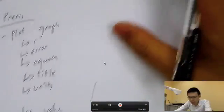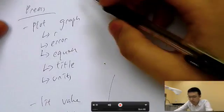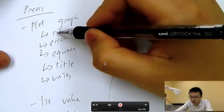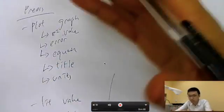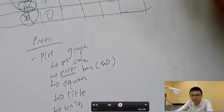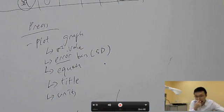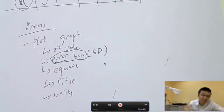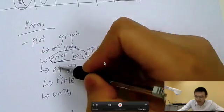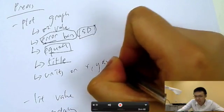For data processing, if you plot a graph — which is very common when investigating the relationship between two variables — you must include five things: the R² value (how much data is spread from the mean); error bars, where the error used is the standard deviation from your trials; the equation of the straight or curved line (Excel can generate this); a title for your diagram; and units on the x and y axes. If you have these five things, you should be good.